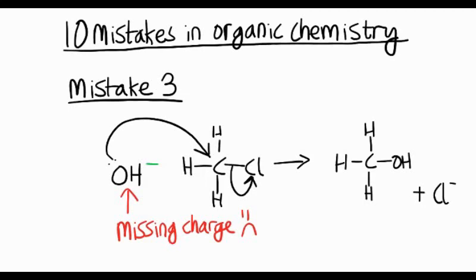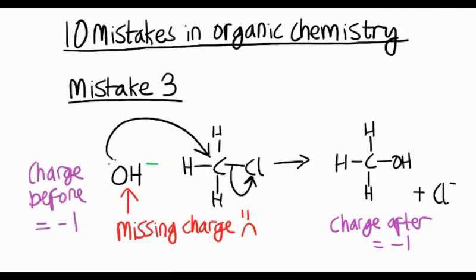Notice the total charge at the end is minus 1, so the total charge at the beginning must also be minus 1. You've always got to check your charges balance and that will help you spot if you're missing a charge. Just memorize the charges of common ions like cyanide, hydroxide, fluoride, chloride and bromide ions. They all have a minus 1 charge.